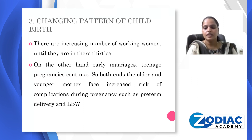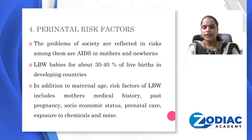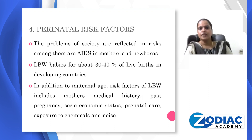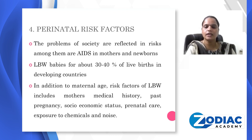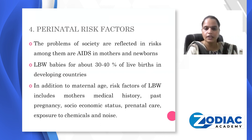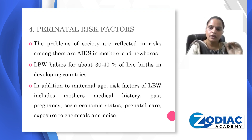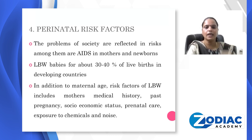Changing pattern of childbirth — more preterm babies are delivered. The fourth trend is perinatal risk factors. The problems of society are mainly reflected in risk among aged mothers and newborns. Low birth weight babies are delivered; in developing countries, around 30 to 40 percent of live births are mainly low birth weight babies. Maternal age is the main factor for perinatal risk. Risk factors for low birth weight babies include the mother's medical history like thyroid problem, anemia, cardiac problem, diabetes, hypertension, past pregnancy complications, and poor low socioeconomic status.